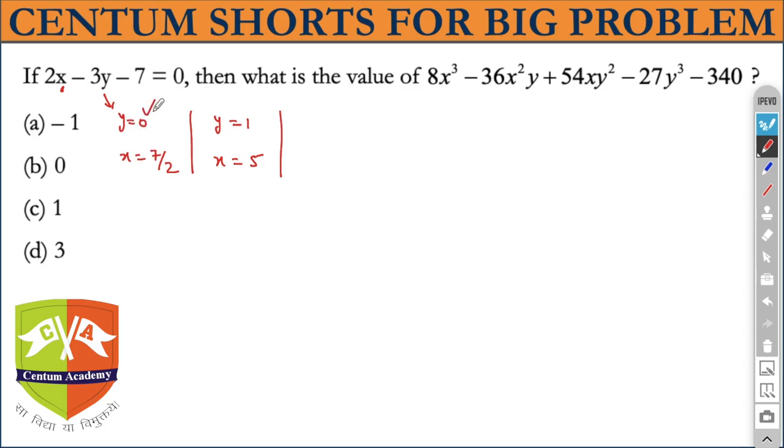y = 0 is beneficial for me because this, this, and this are anyway gone. My direct answer is 8 times x cube, which is 343/8 minus 340.